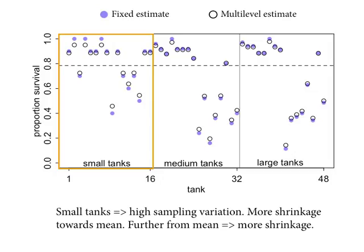You get more shrinkage when the tanks are small — when there's less data per cluster. There's more movement of the open points from the blue points in the small tanks than in the big tanks on the far right. Because there's less evidence per tank, the naive posterior in a fixed effects model has a bigger standard deviation there; in the bigger tanks there's more certainty. So the Bayesian model automatically augments the estimate with more information from the population that drags it closer to the grand mean.